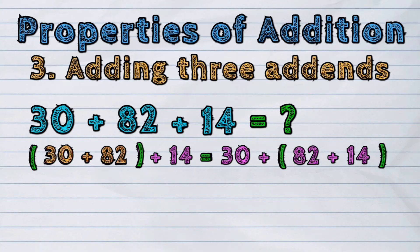So, the sum of 30 and 82 is 112 plus 14. On the other side, 30 plus the sum of 82 plus 14.